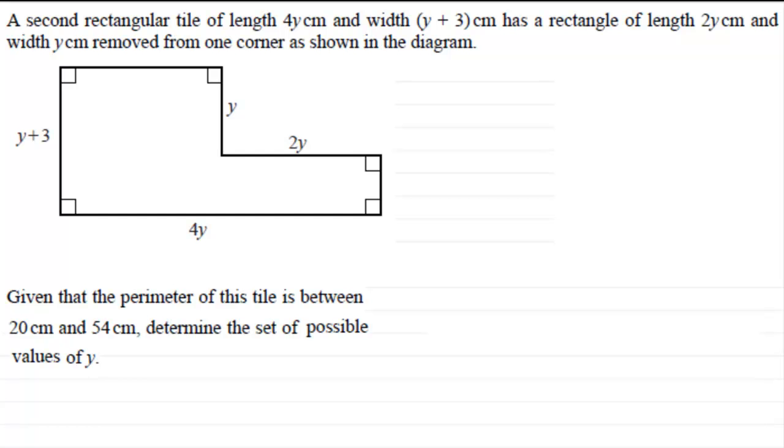Okay, welcome back then if you had a go. So we're told that the perimeter lies between 20 and 54 cm. Well first of all, I want to work out what the perimeter, the distance around the rectangle, is going to be. I'm missing a few lengths here, so let's fill those in first.